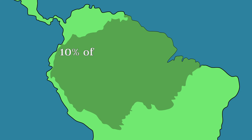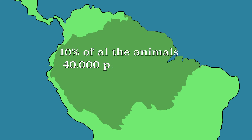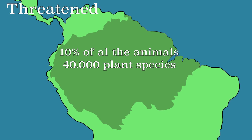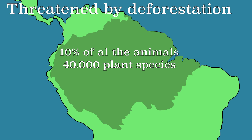About 10% of all animal species and 40,000 plant species are found in the Amazon region. But this biodiversity is under pressure because many trees are cut down. This is called deforestation. The next video explains the consequences of deforestation.